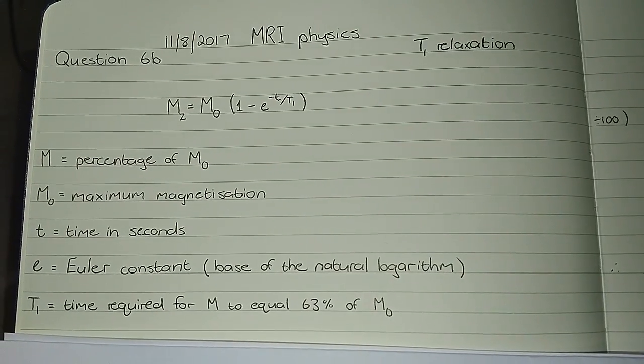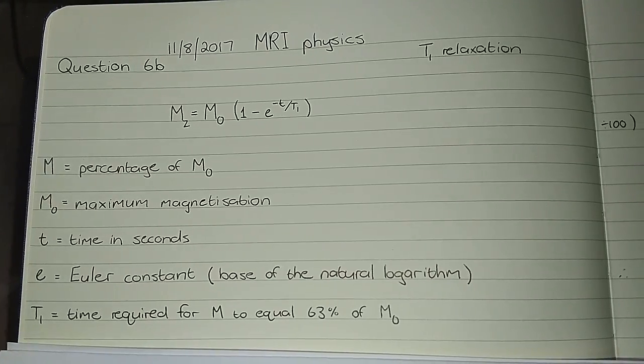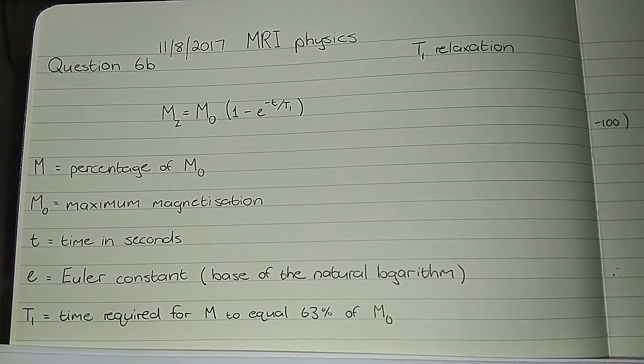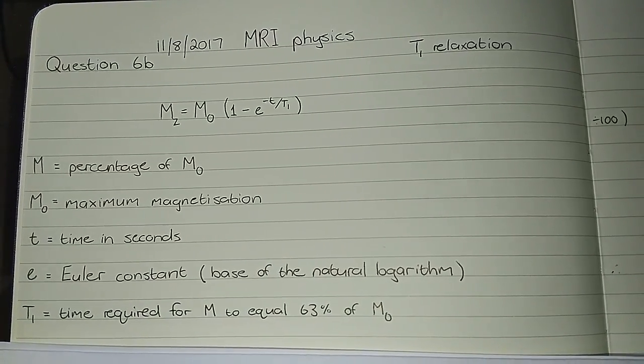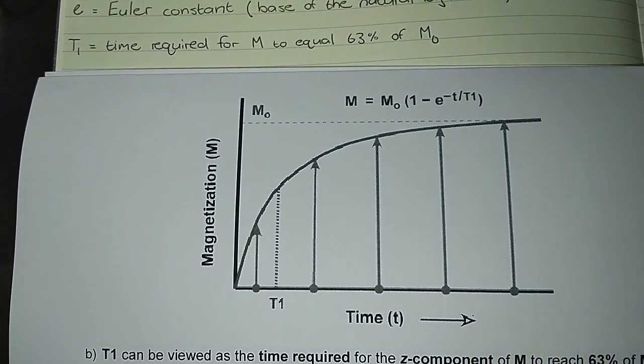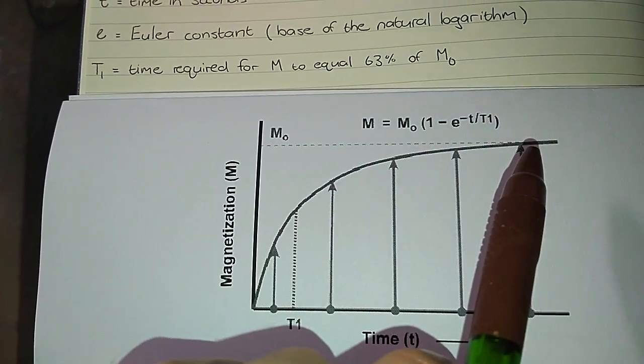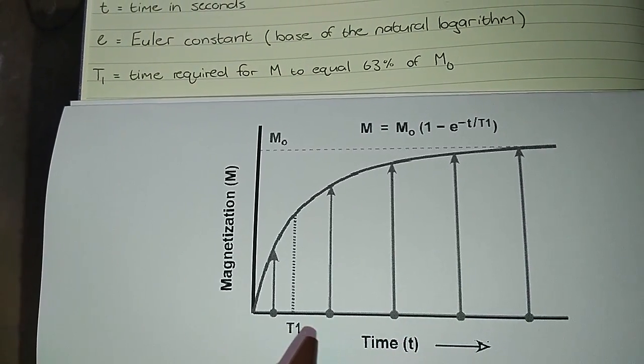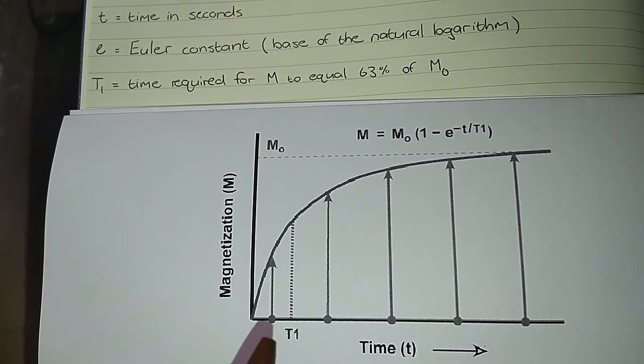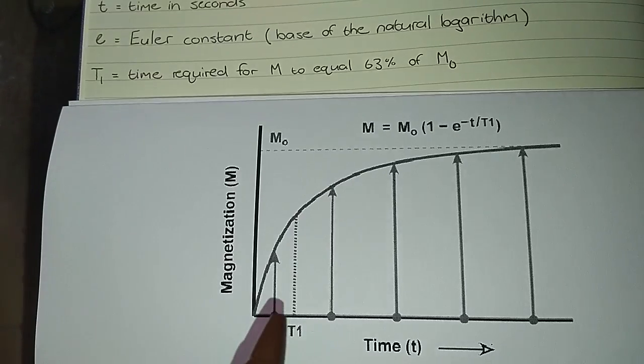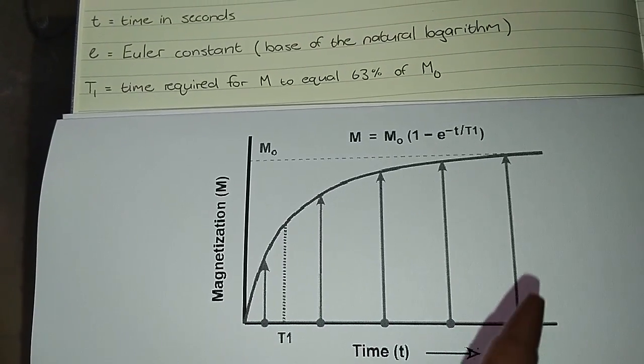Okay, so back to the question. What everything essentially means is M is the value of maximum magnetization. So if we look at the graph, that is the point in the graph when it starts flattening out over here.